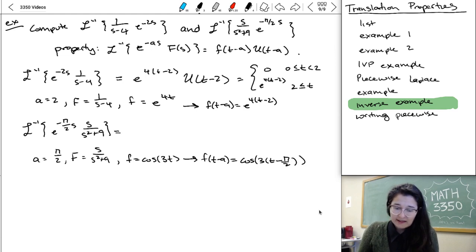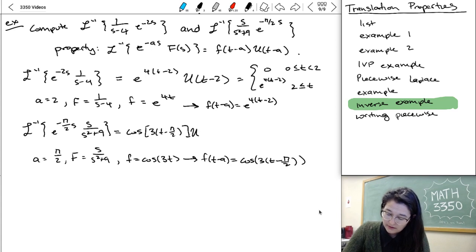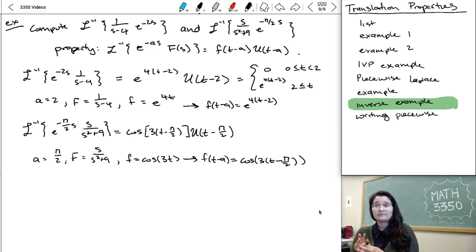So then this is gonna be our F of T minus A, U of T minus A. So my F of T minus A I just wrote is cosine of three times T minus pi over two. And my U has to take U of T minus A. Cool.